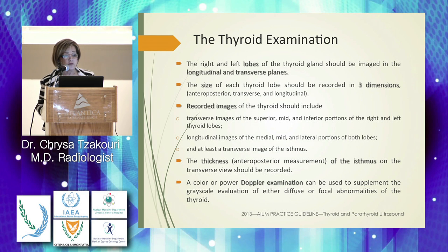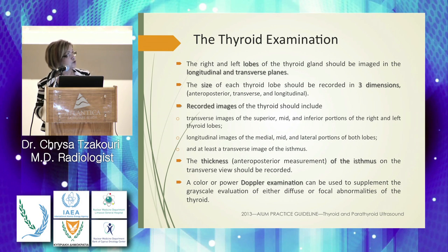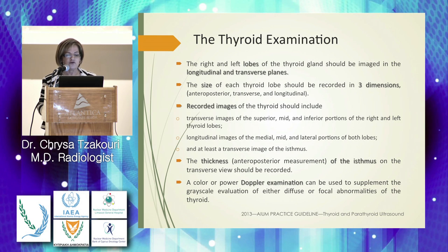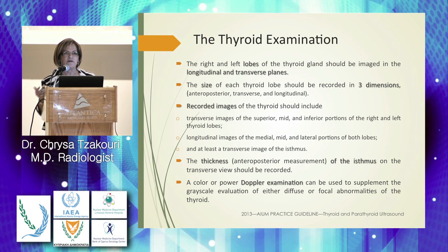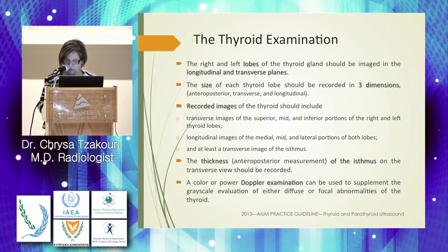Recorded images must include transverse images of the superior, mid, and inferior portions of both the right and left thyroid lobes, longitudinal images of the middle and lateral portions of both sides, and at least one transverse image of the isthmus. The thickness of the isthmus on transverse imaging should be recorded. Color or power Doppler examination can supplement the grayscale evaluation of diffuse or focal abnormalities.